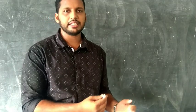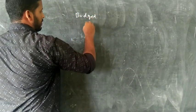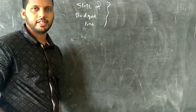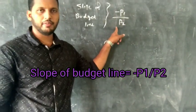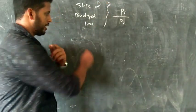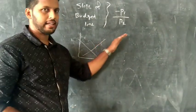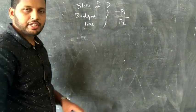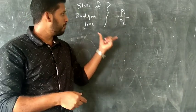This budget line has a slope. The slope of the budget line equation is minus P1 by P2.